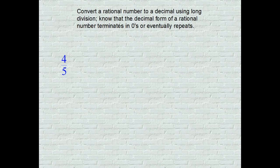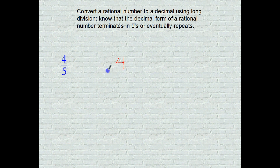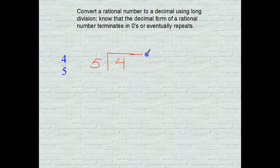So I am going to start here with 4 fifths and I am going to get the decimal representation of 4 fifths. You are going to take the numerator 4 and divide it by the denominator, which is 5. How many times does 5 go into 4? You cannot do that — 5 does not go into 4 at all.